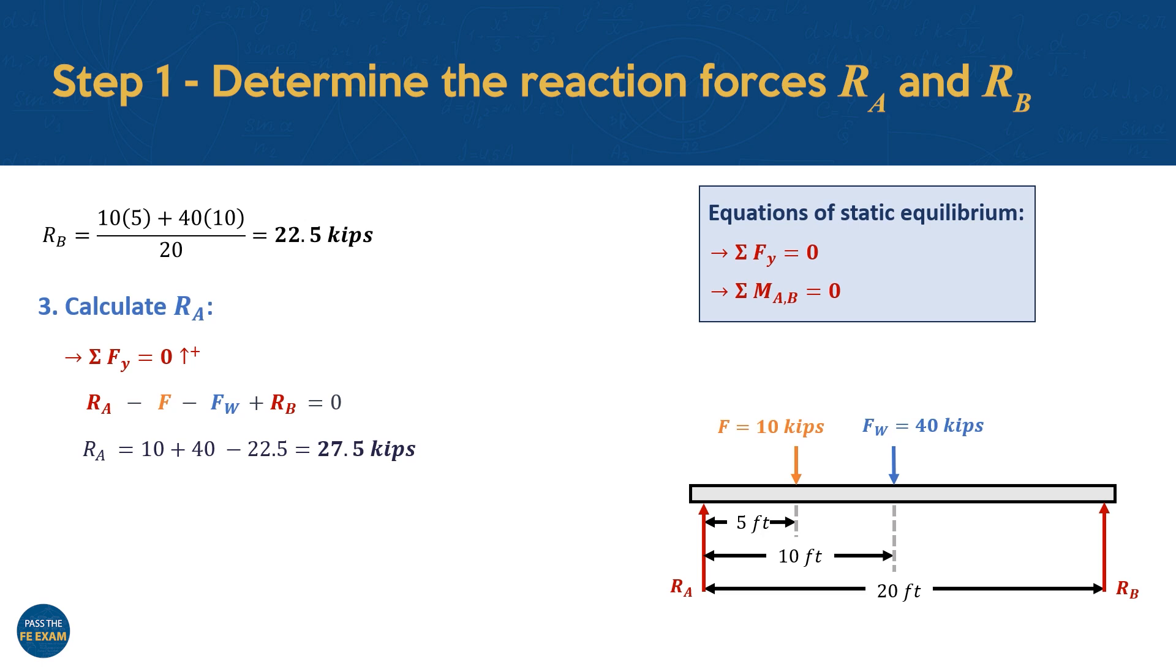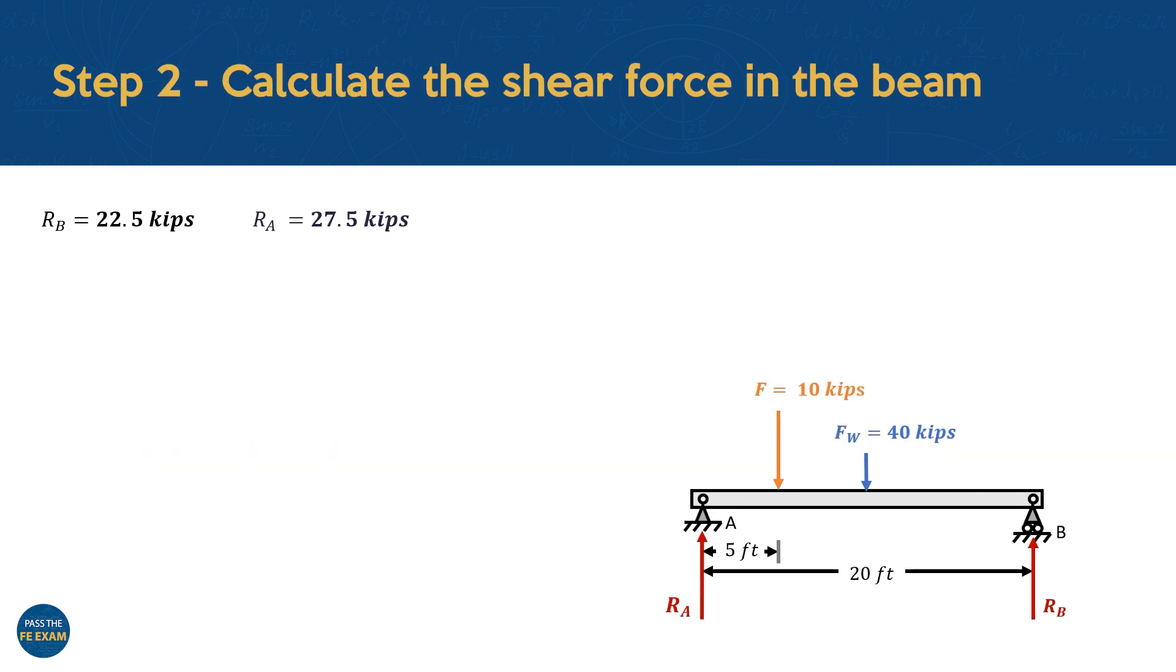With the support reactions known, we can proceed by evaluating the shear force along the length of the beam, moving from the left end at support A to the right end at support B. However, what's important to consider here is that we'll be using the full distributed loading W and not its equivalent point load we found earlier.